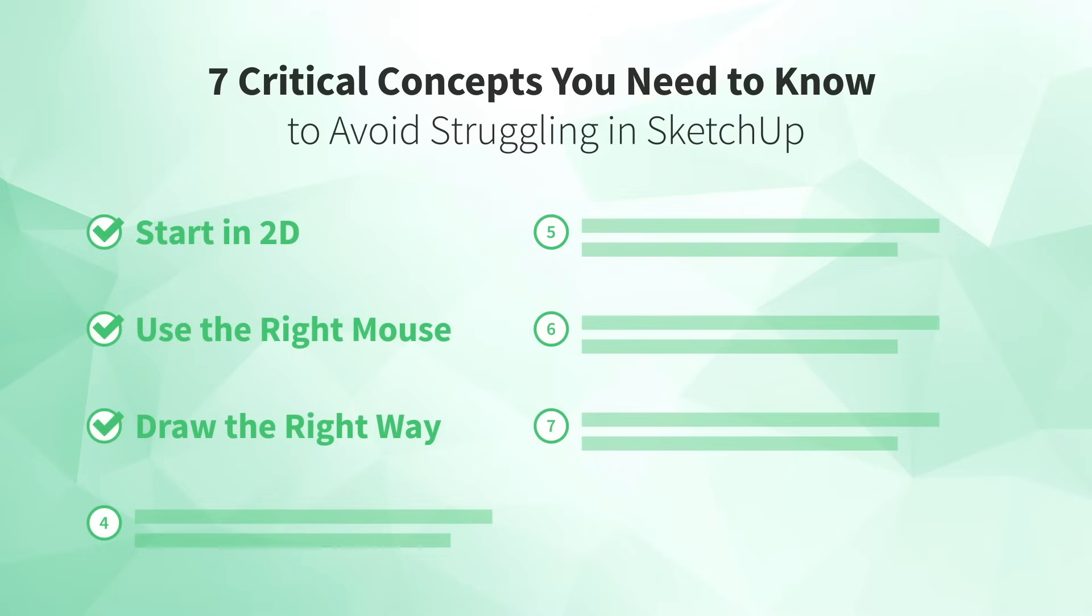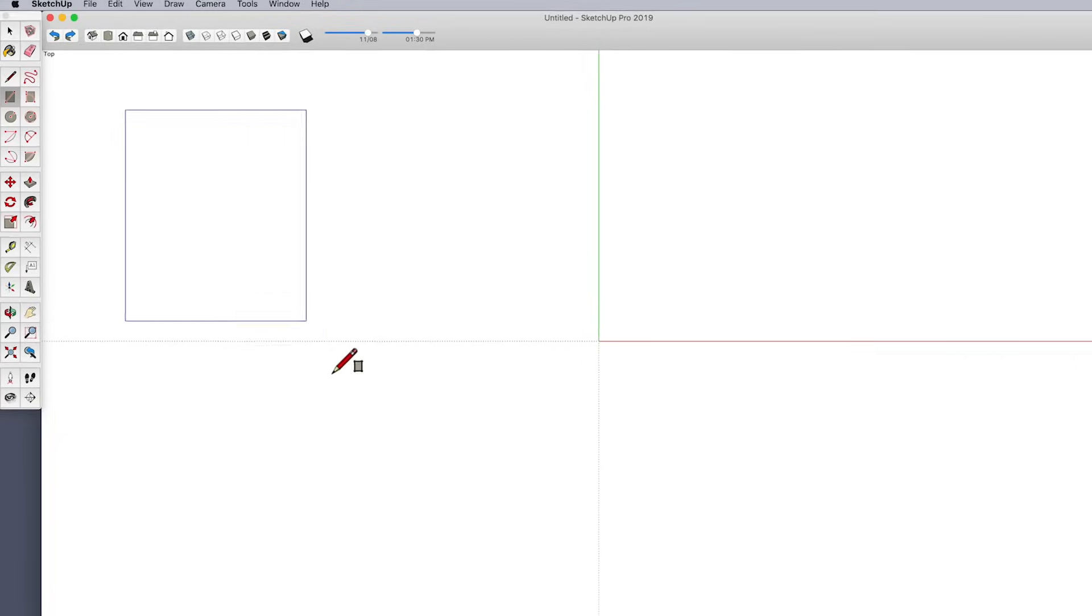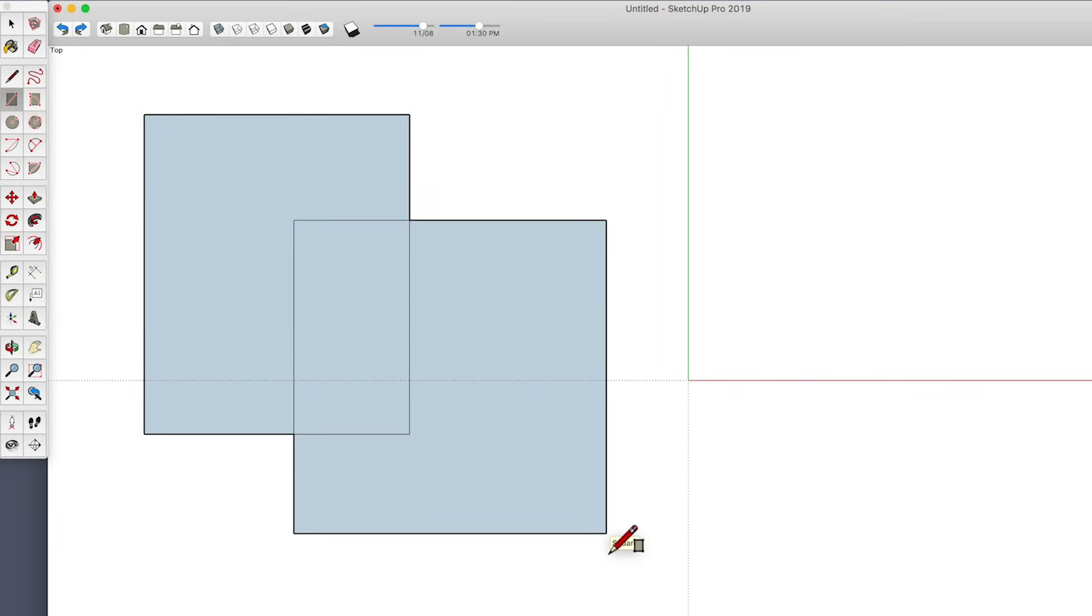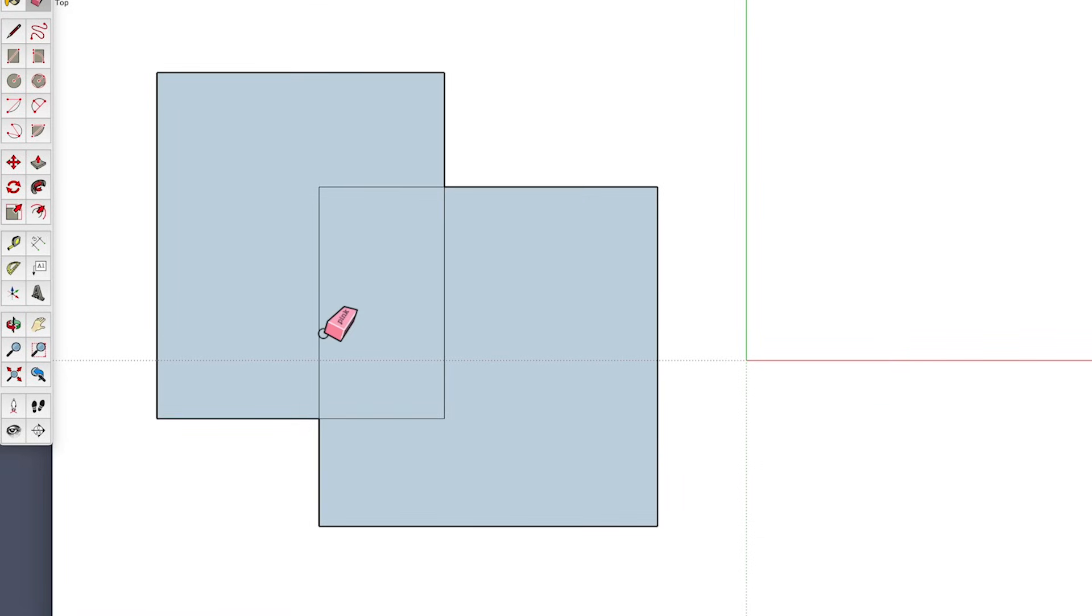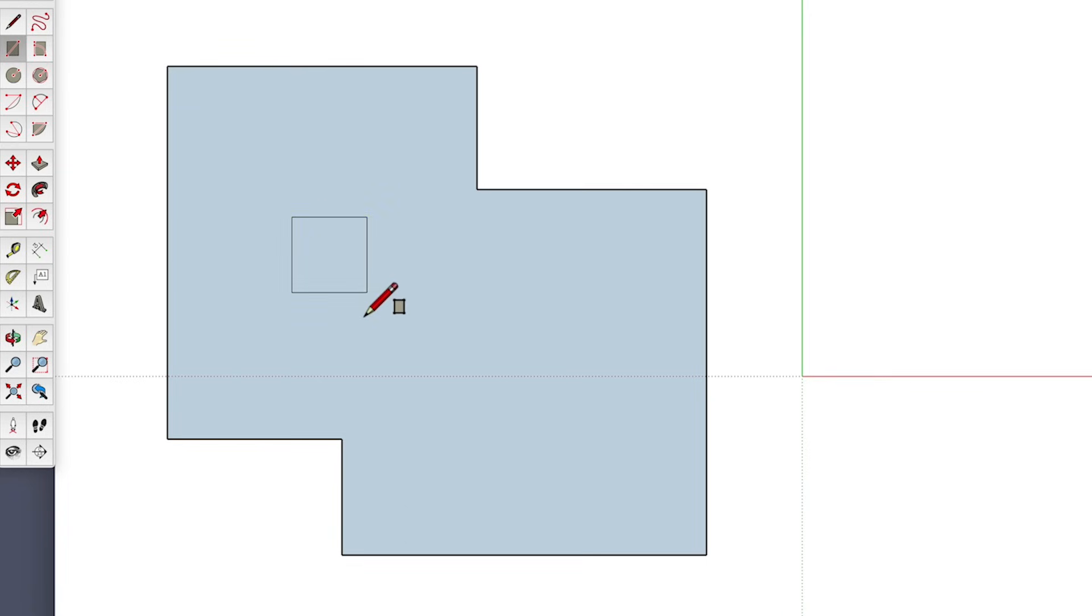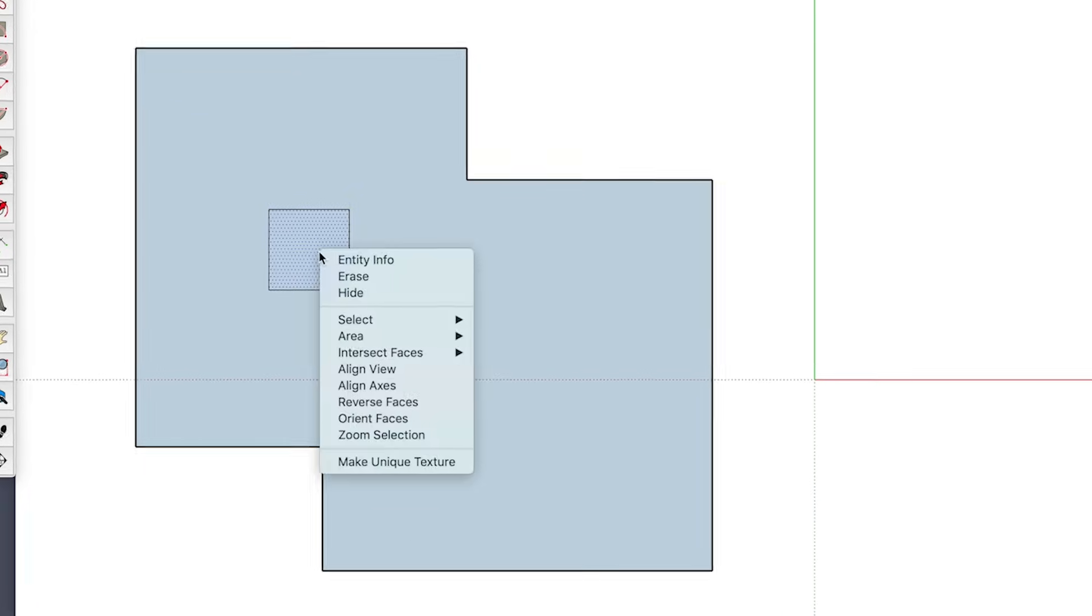Number four, understand stickiness. In SketchUp, edges and endpoints stick to other edges and endpoints. This is a good thing. You can overlap shapes and edit them to create new ones. Try it. Practice overlapping geometry. Then use the eraser tool to delete edges you don't need. Or get rid of faces by right clicking on the face and picking the option for erase. In this way, stickiness is helpful for modeling quickly in SketchUp. But down the road, stickiness can also create the absolute most painful problems you'll ever encounter in SketchUp. Luckily, I've got you covered with the next tip.